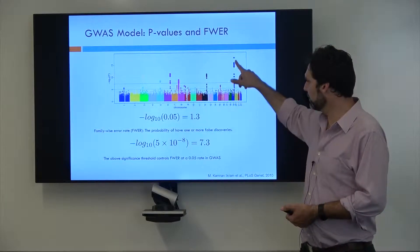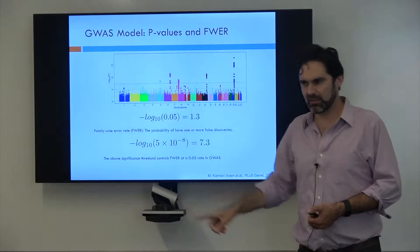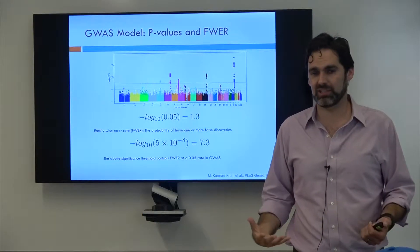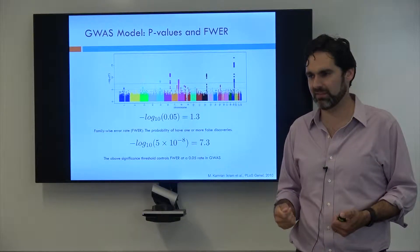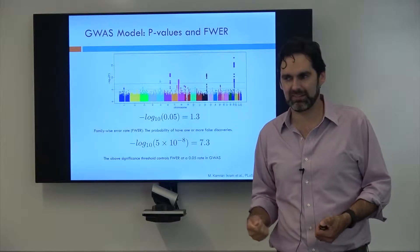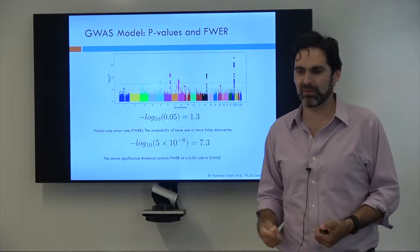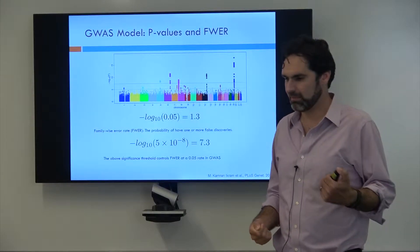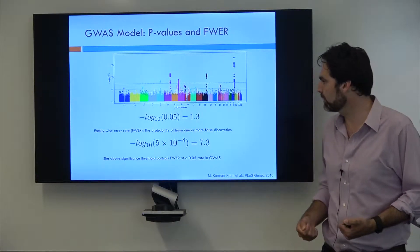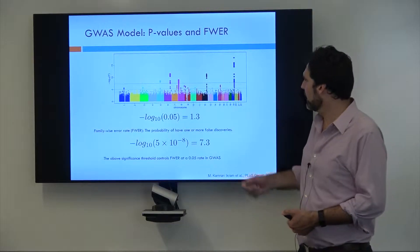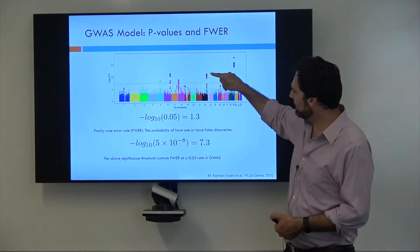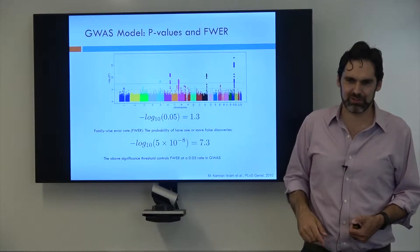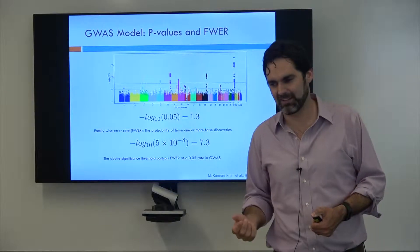So what we're going to do is call each one of these peaks a genome locus or an associated locus. It's essentially just a region of the genome where we know that something is going on in the genetics that appears to have an effect on phenotypes. And whatever variant happens to be at the very tip top of these peaks, we'll usually call the top GWAS hit or the top hit.